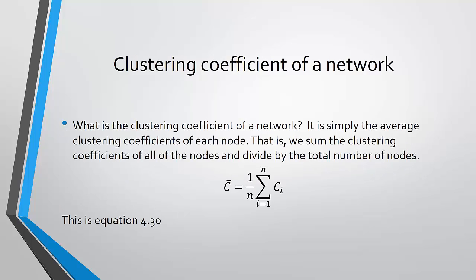That is the clustering coefficient of each node. To determine the clustering coefficient of the entire network, we find a straight average. If there are n nodes, we sum all the clustering coefficients and divide by n. This is the equation in the text labeled equation 4.30.